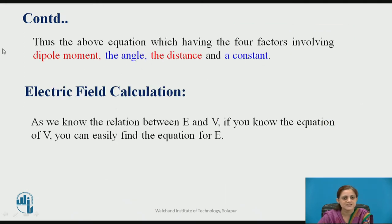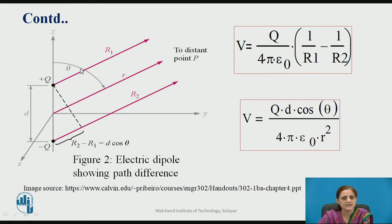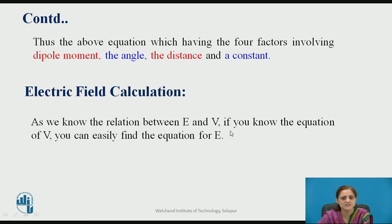The above equation for potential involves four factors: the dipole moment Qd, the angle cos theta, the distance term 1/R squared, and the constant 1 upon 4 pi epsilon naught.